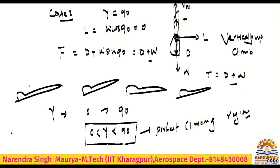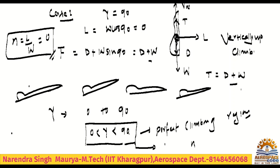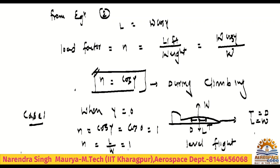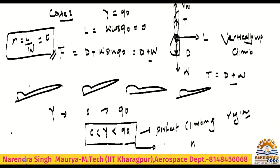What will be the load factor? If gamma is exactly 90 degrees, then L equals 0 so n equals 0. If gamma is 0, it is steady level and n equals 1. So for steep climbing — gamma between 0 and 90 — the load factor must be less than 1 and greater than 0.